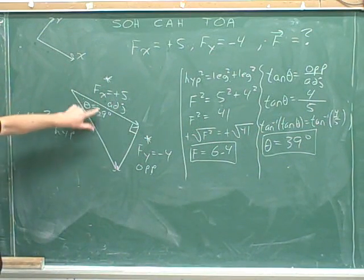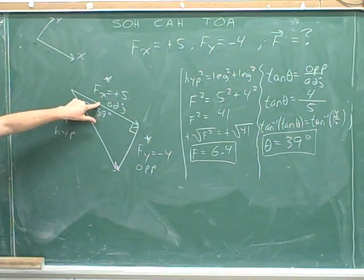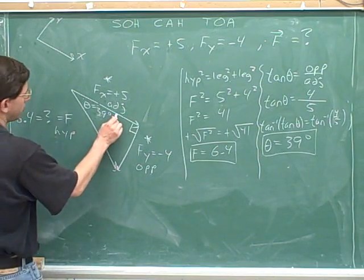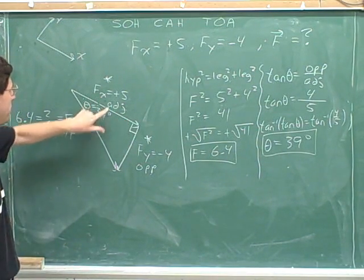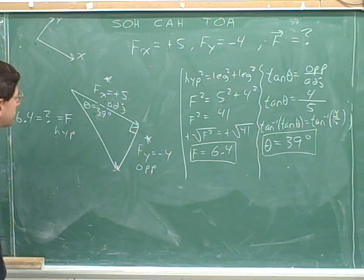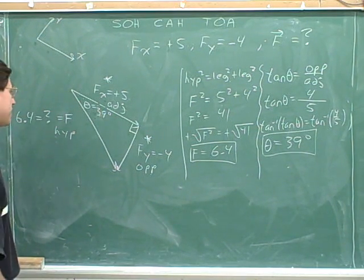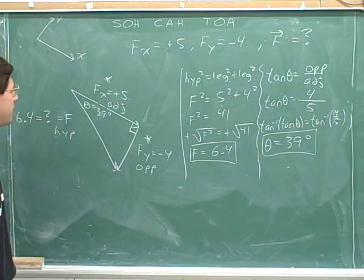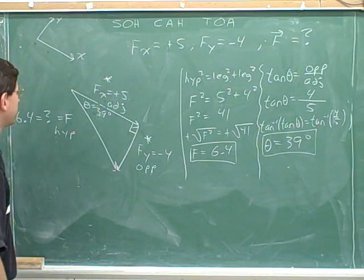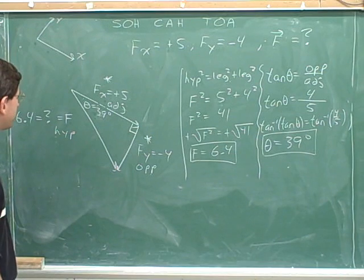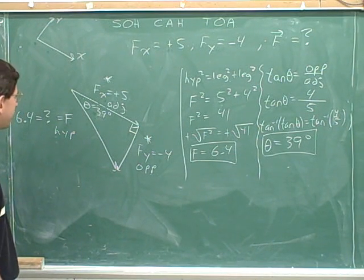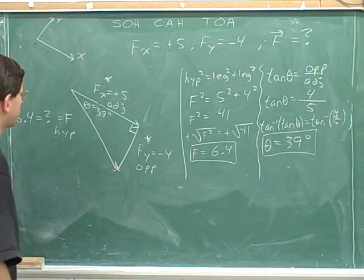You see that this angle is bounded by the x axis—positive or negative. But you can see that this component is pointing in the positive x direction, so we're bounded by the positive x axis. But we are below the positive x axis, or we might say to the left of the positive x axis. So we are in a direction 39 degrees below or to the left of the positive x axis, or you can just draw the picture.